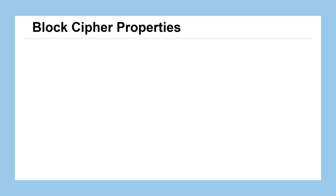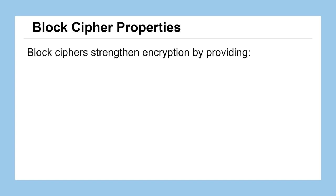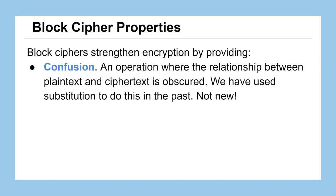Let's look at the properties that block ciphers have. Block ciphers were invented to strengthen encryption methods by providing the following characteristics. The first is what's called confusion — any operation where the relationship between plaintext and ciphertext becomes obscured. We've done this before; we might have just called it substitution. We've done confusion with the Caesar cipher and with the LFSR sum cipher. It's just a new name for it.